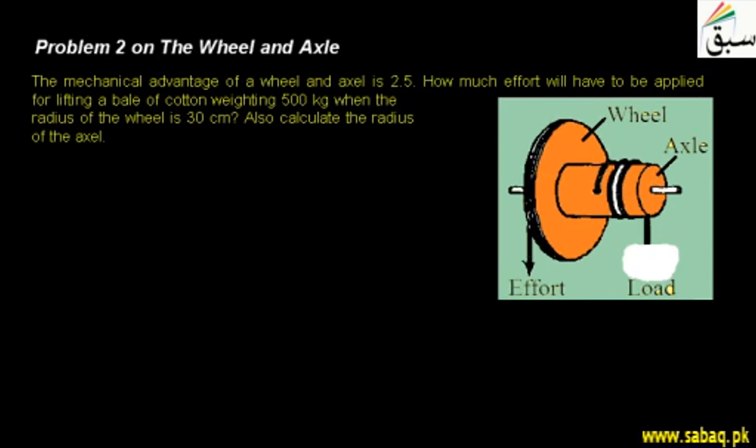Students, we will solve the second problem related to wheel and axle. The statement is: the mechanical advantage of the wheel and axle is 2.5. How much effort will have to be applied for lifting a ball of cotton weighing 500 kg when the radius of the wheel is 30 cm? Also calculate the radius of the axle.